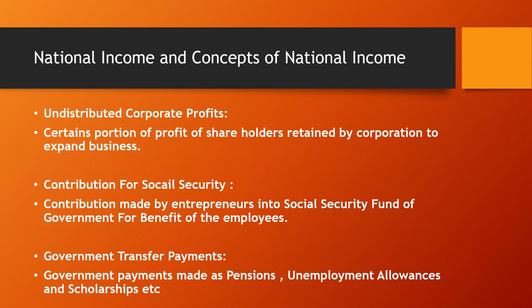Undistributed corporate profit is a certain portion of profit retained by corporations to expand business. Social security contribution is the contribution made by entrepreneurs into social security funds of the government for the benefit of employees. Government transfer payments are payments made as pension and unemployment allowances in scholarships.